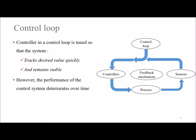Several hundreds to a thousand control loops are in place in an industry. Controllers in a control loop are tuned to make sure that the system tracks desired set points correctly and quickly and remains stable.